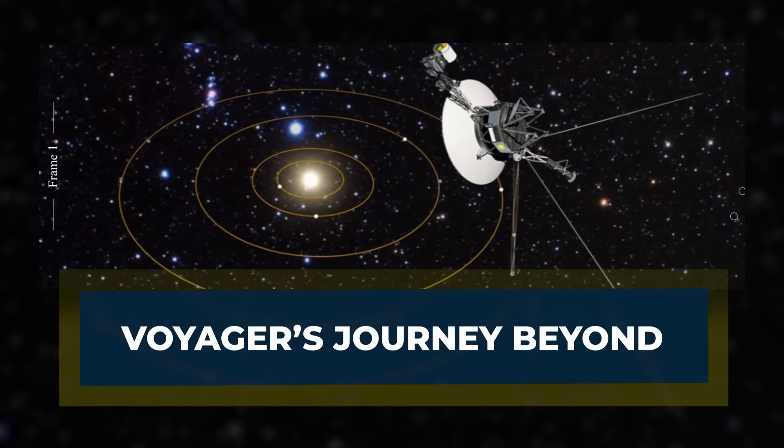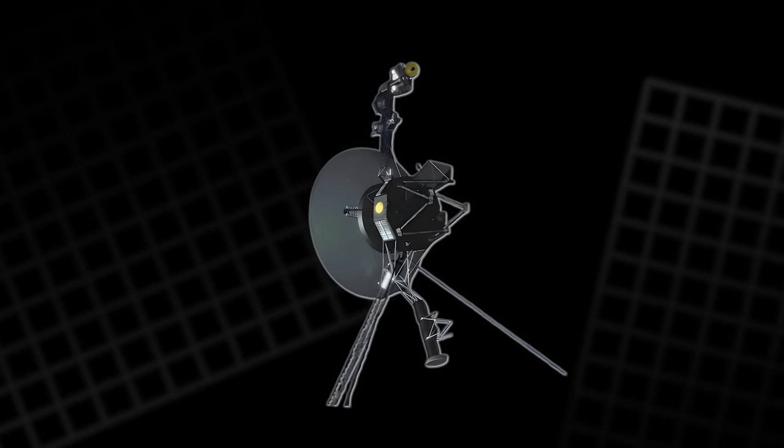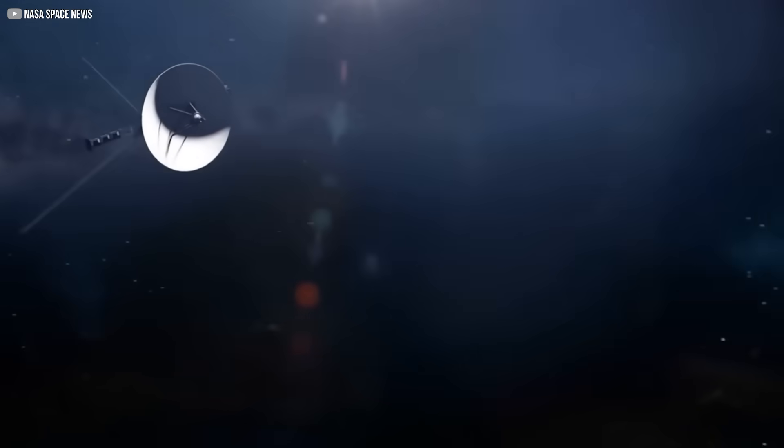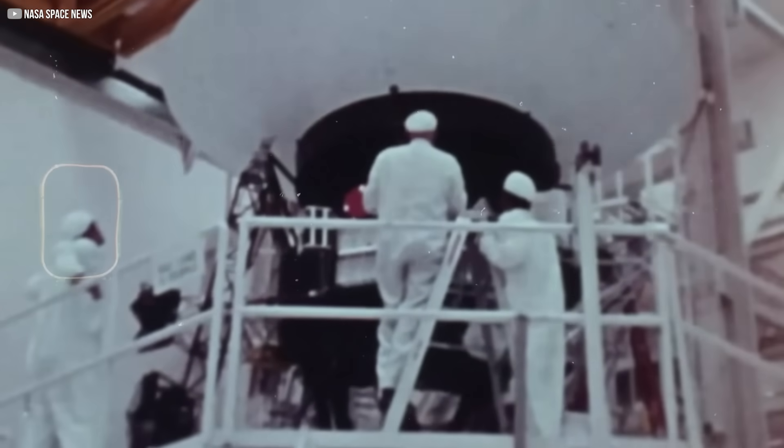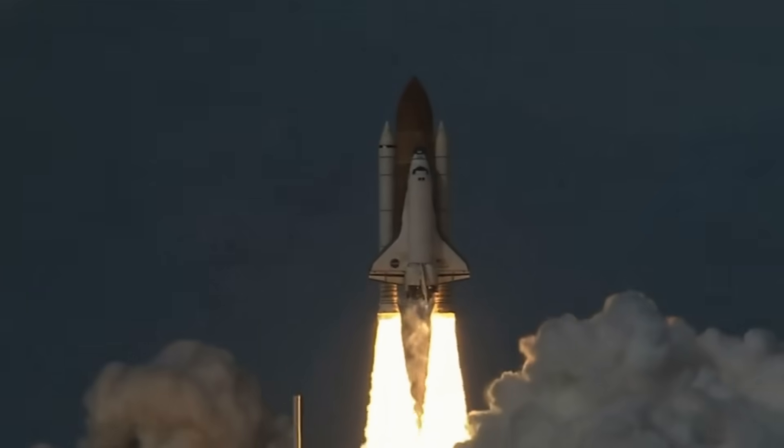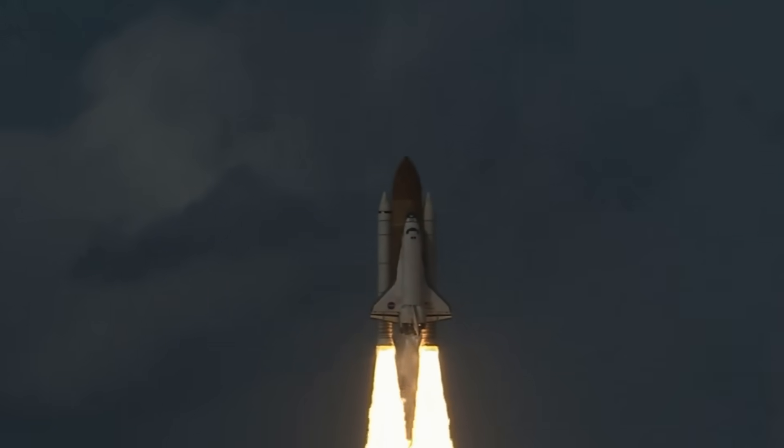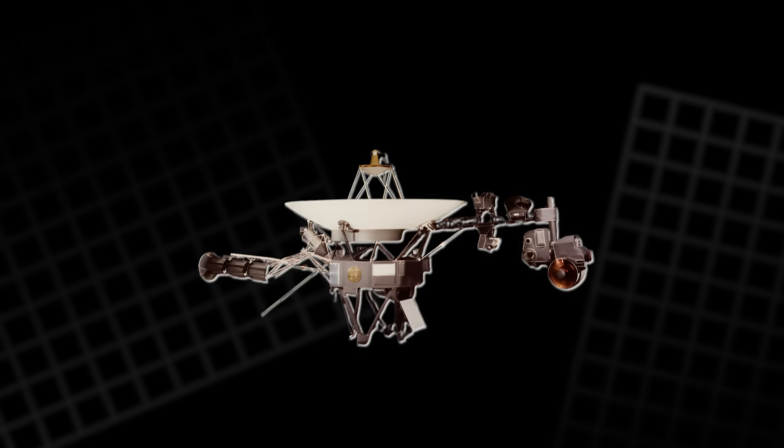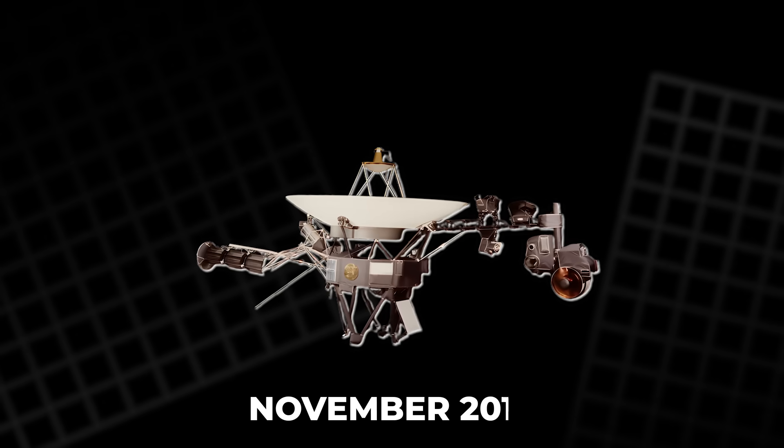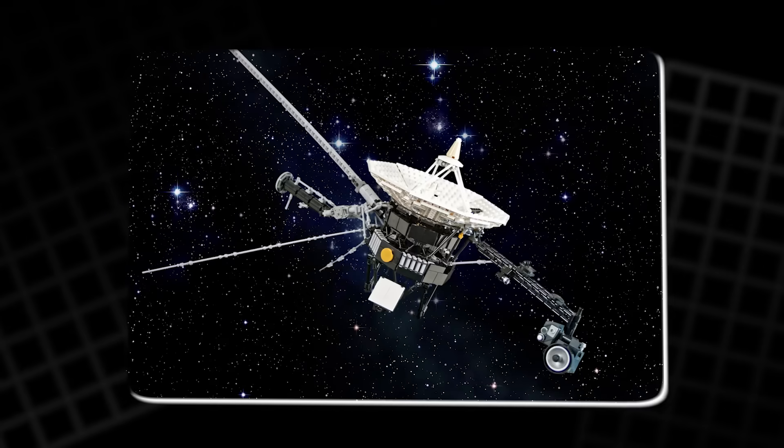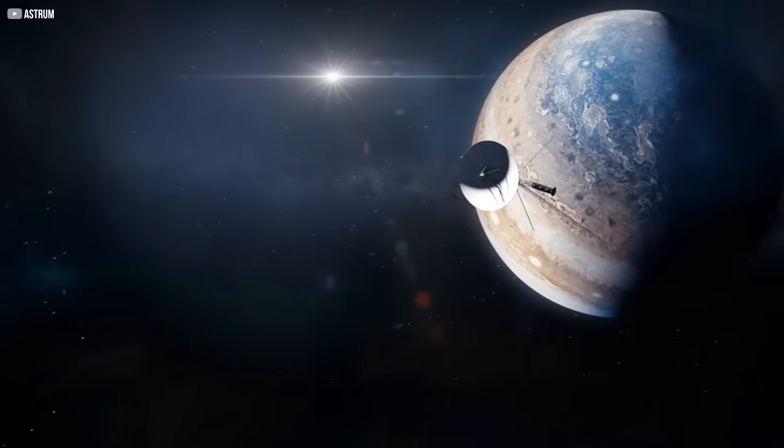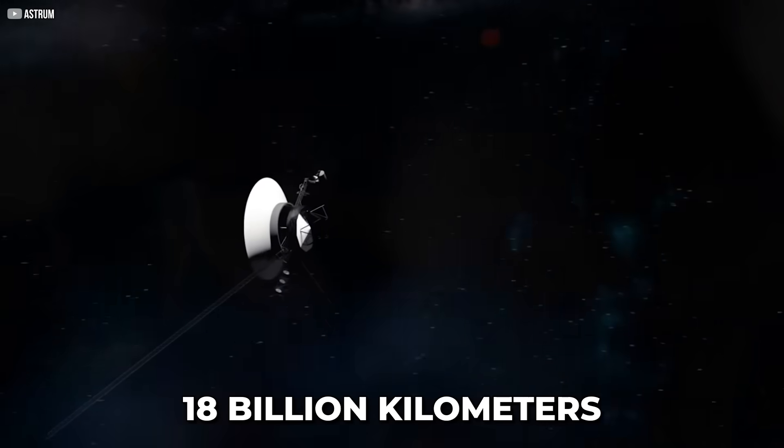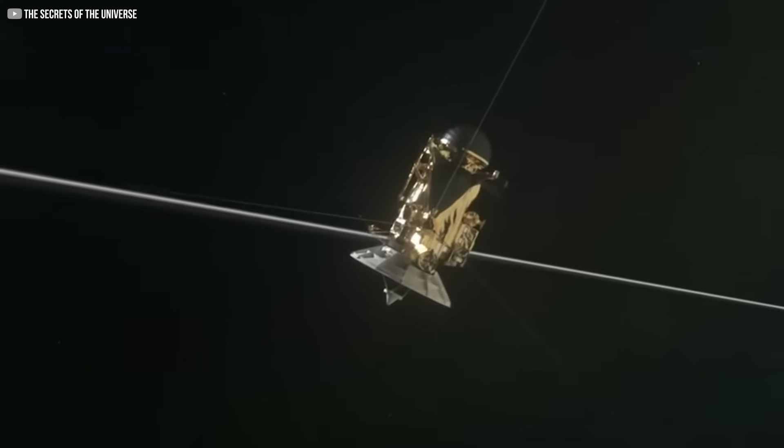NASA's Voyager spacecraft were the pioneers in crossing the threshold of our solar system. Voyager 1 made history in August 2012, when it became the first human-made object to reach interstellar space. Voyager 2 followed in November 2018, completing its own journey into the unknown. Although their paths were different, with Voyager 1 traveling approximately 18 billion kilometers farther from Earth, both spacecraft recorded remarkably similar findings.